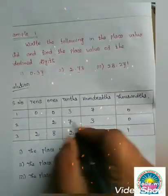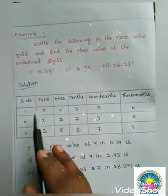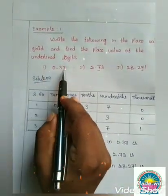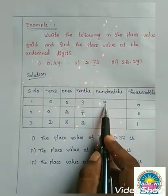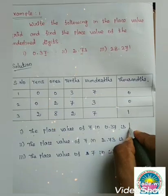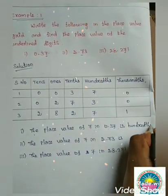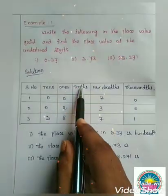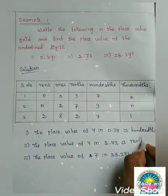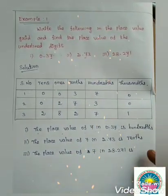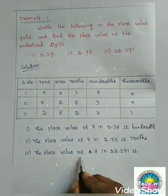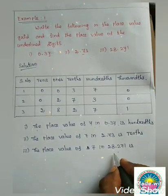All other places will have value 0. Now find the place value of the underlined digit. The underlined digit is 7. For 0.37, the place value of 7 is hundredths — 1/100. For 2.73, the place value of 7 is tenths — 1/10. For 28.271, the place value of 7 is hundredths — 1/100.